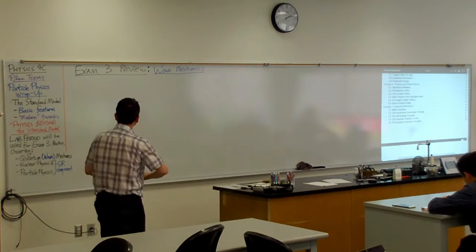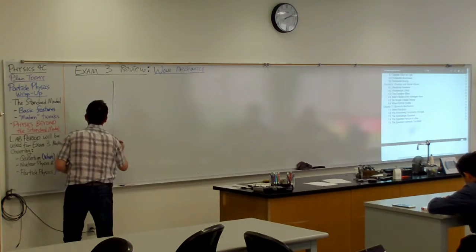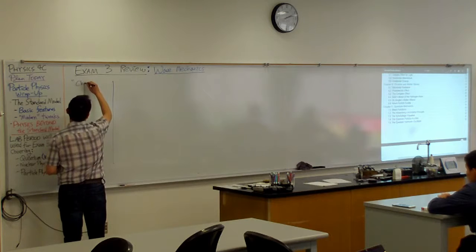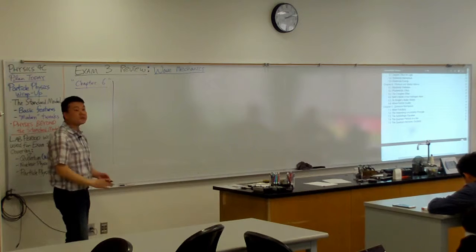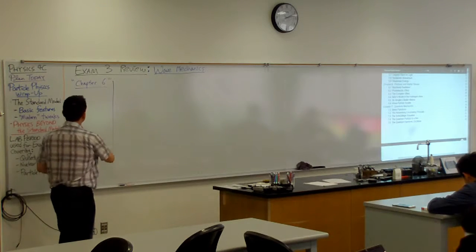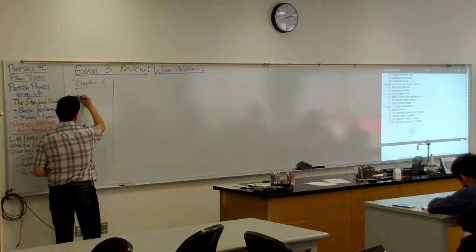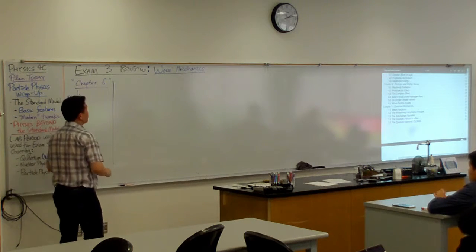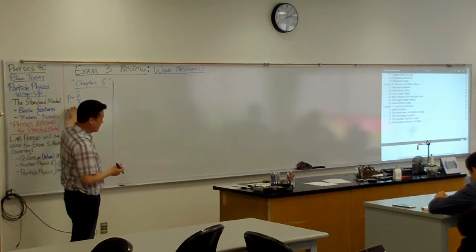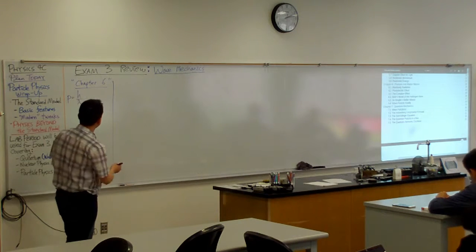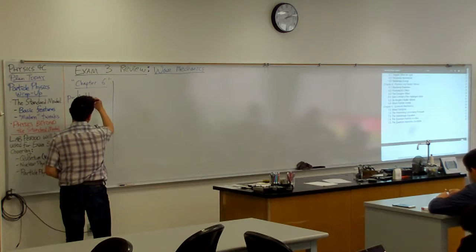Let me spell out what those intuitive basics from chapter six are that you ought to remember. It really starts with, in our context, the de Broglie relationship — that momentum is related to the wavelength by h over lambda. And in the context of wave mechanics, we can expand on this: momentum is given by h-bar times the wave number.